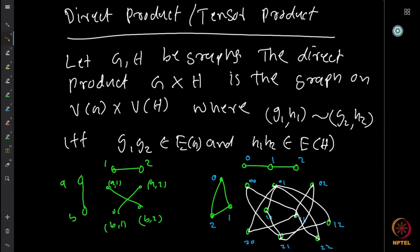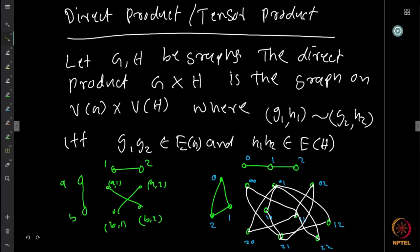So g1g2 must be an edge in G and h1h2 must be an edge in H for there to be an edge between (g1, h1) and (g2, h2). If you take the product of two edges, in contrast to the Cartesian product, you only get the cross edges — not the four other edges. The symbol used again denotes how the edges are defined.